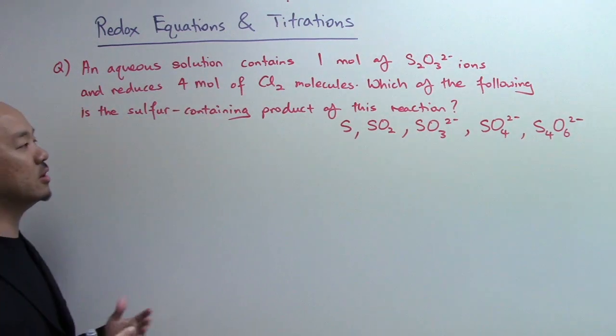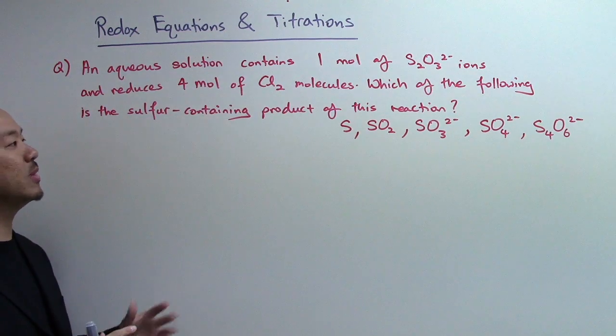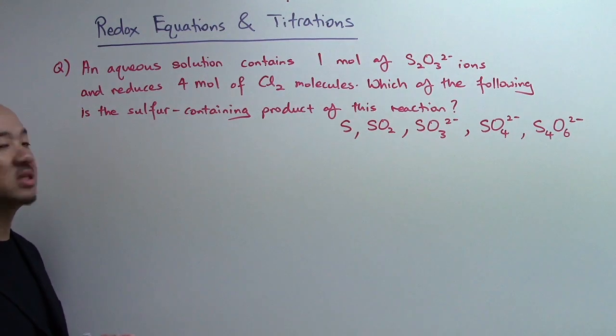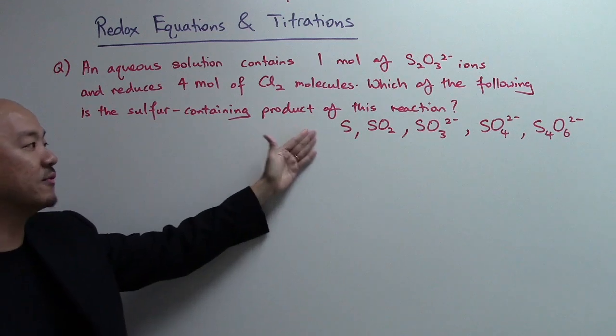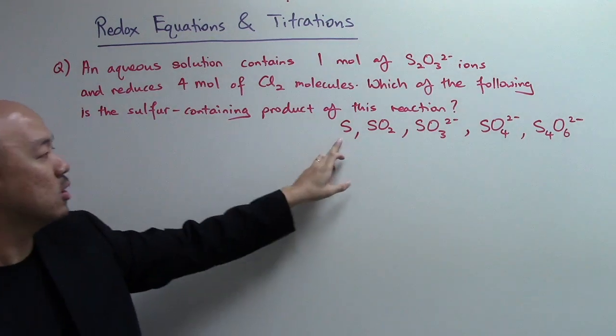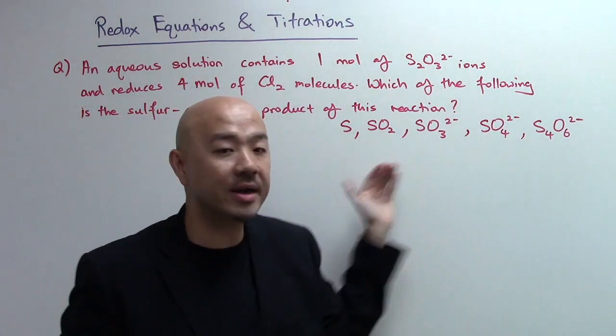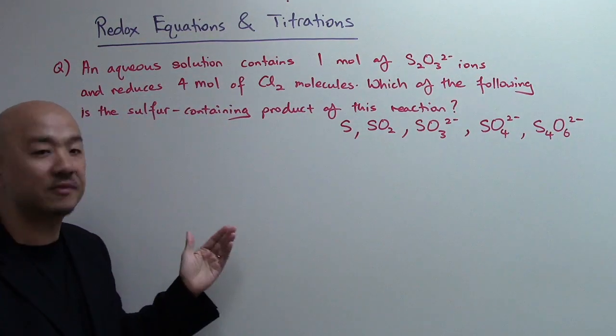An aqueous solution contains one mole of S2O32- ions and reduces four moles of chlorine molecules. Which of the following is the sulfur-containing product of this reaction? So I've given five options: S, SO2, SO32-, SO42-, S4O62-. The answer would be one of these.